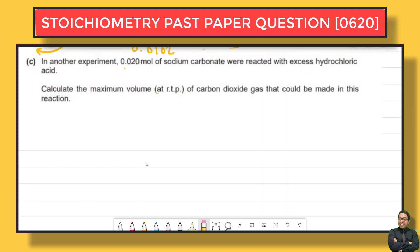The last question: in another experiment, 0.02 mol of sodium carbonate were reacted with excess hydrochloric acid. When you see the word 'excess', you exclude that reagent from your calculations, because only part of its moles reacted and part did not. So we depend on the number of moles of sodium carbonate.